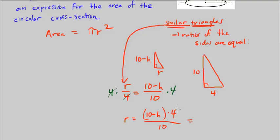And we can simplify this, divide 4 by 2, divide 10 by 2, so this is 10 minus h times 2 over 5. So that's r.